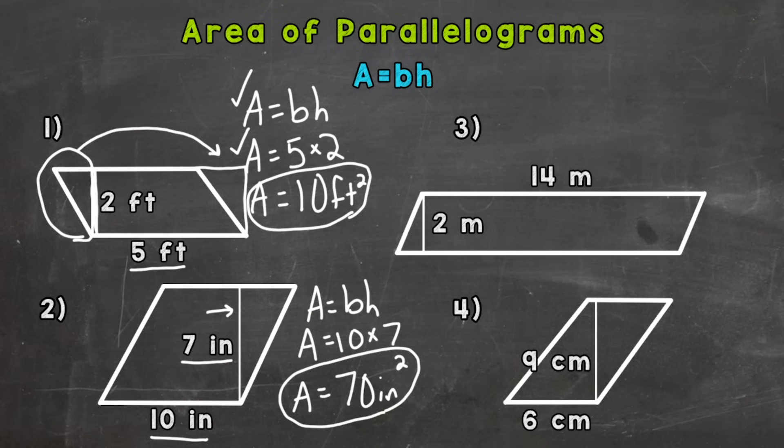Next, number three, let's write out our formula. Area equals base times height. Plug in. The base here is this 14. It's okay that it's up top, the measurement. This bottom side is the same. It's congruent to the top. So it doesn't matter where the measurement is listed. So 14 times a height of two, and we get an area of 28 square meters.